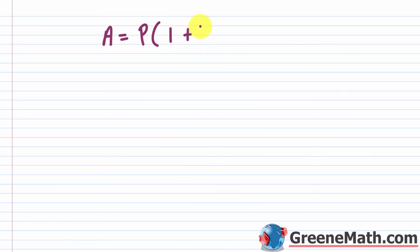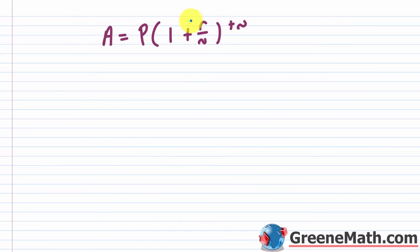Going back to the formula for compound interest from the last lesson: A equals P times the quantity one plus r over n, raised to the power of tn. A is the future value of the account — the account balance after a given number of years. P is the principal, meaning the initial amount invested. R is the interest rate as a decimal. N is the number of compounding periods in a year, and T is the number of years.